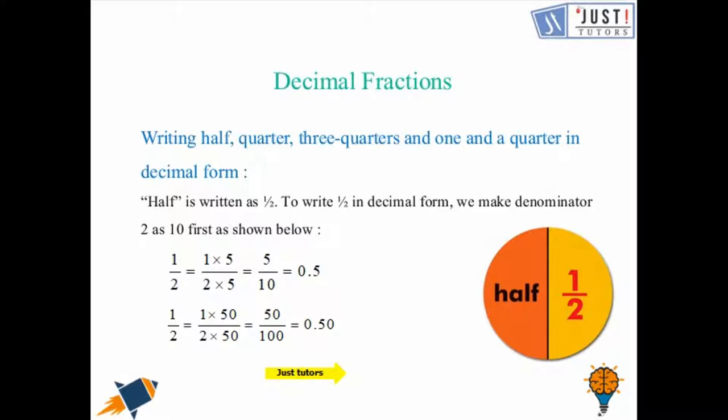Let's begin with writing half in decimal form. As we know, half is written as 1 over 2. To write half in decimal form, we need to make denominator 2 as 10 first. We know that if we times 2 by 5, we will get 10. So here we will times both 1 and 2 by 5 and we will get 5 over 10 which is 0.5. If we are dividing by 10, we just need to shift the digits one place to the right.